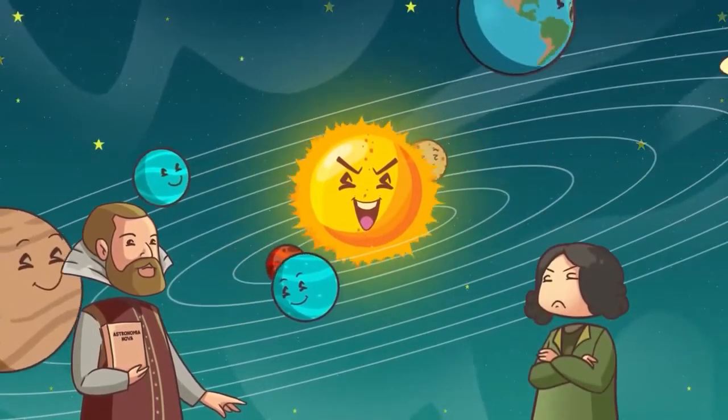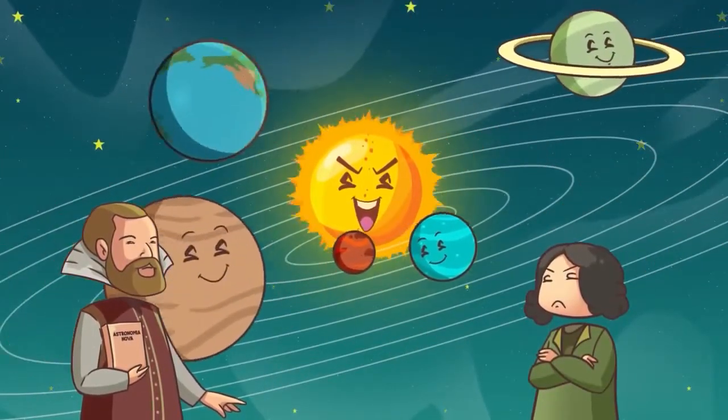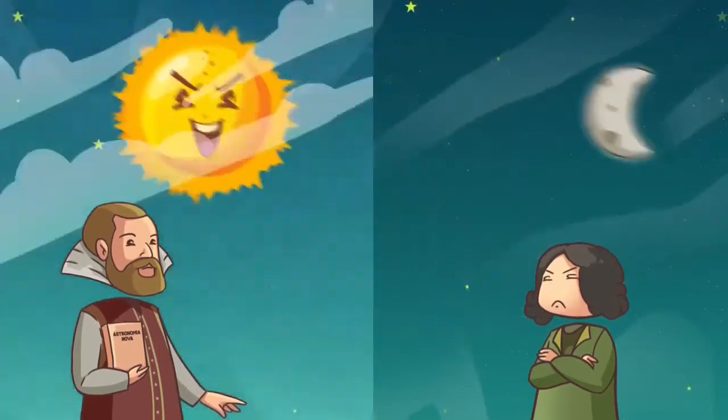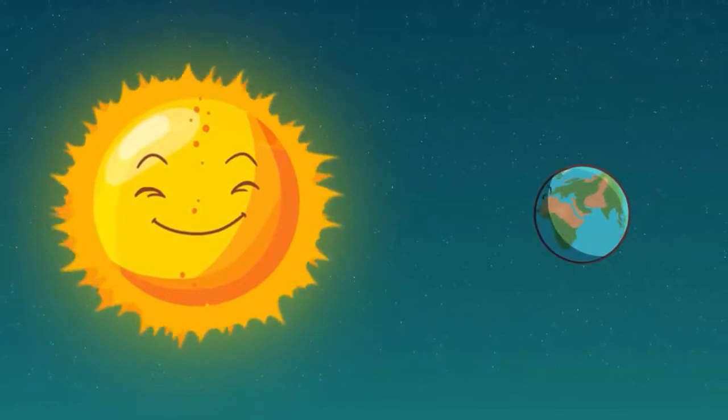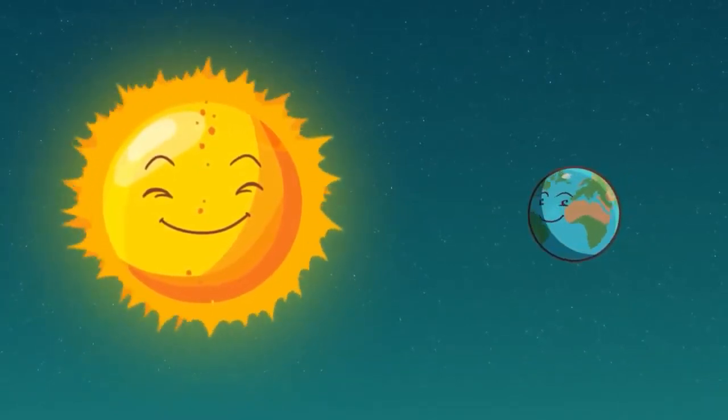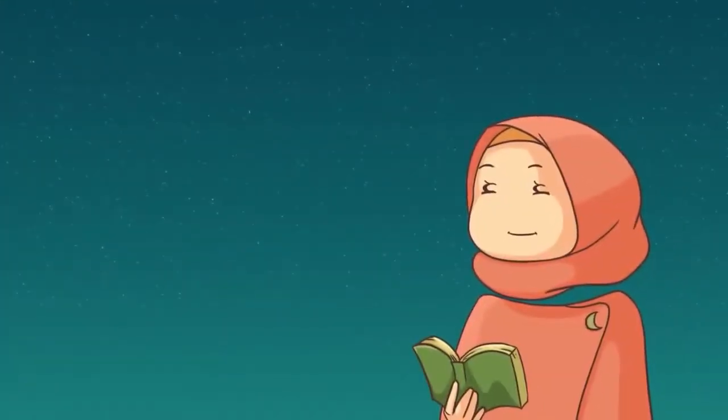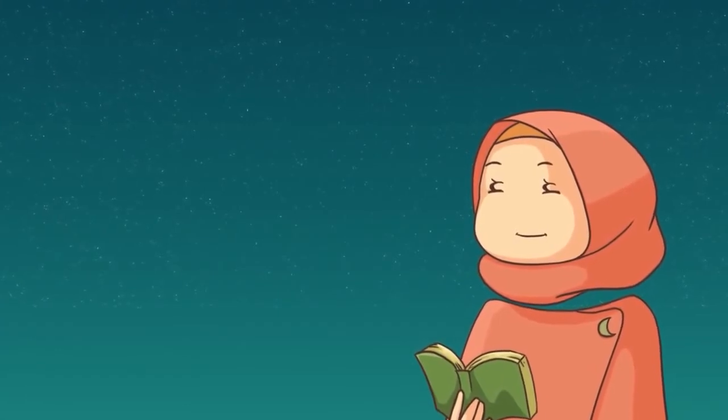With this knowledge, it became possible for European scientists to explain correctly many of the mechanisms of the solar system, including the sequence of night and day. After these discoveries, it was thought that the sun was stationary and did not rotate about its axis like the Earth. I remember having studied this fallacy from geography books during my school days.